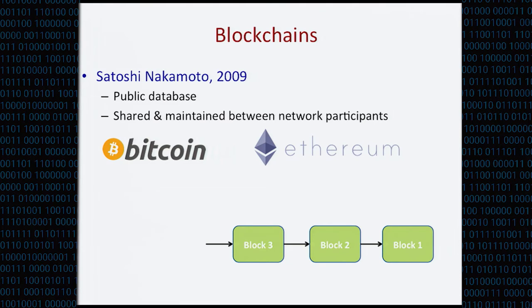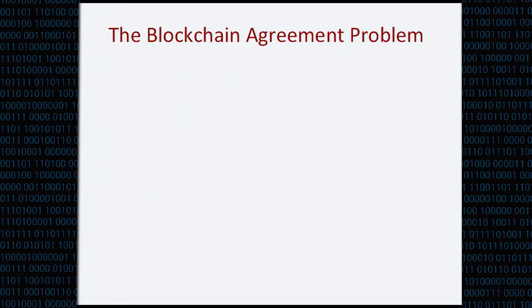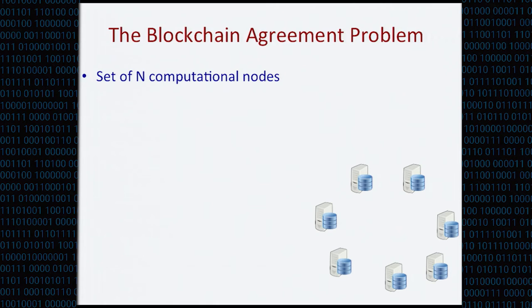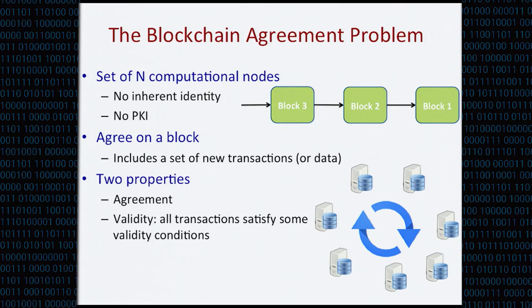These network participants run something called a blockchain agreement protocol so that they can periodically agree on a new block of data and append it to the latest state of the blockchain. These protocols solve the blockchain agreement problem, run between a set of N computational nodes in the network. These nodes don't have any inherent identity and there is no public key infrastructure in the network. There are two important properties a block must satisfy: the agreement property — all honest nodes must agree on the same block — and the validity property — all transactions included in the block must satisfy some validity condition. For example, in cryptocurrency, the double-spending property is a validity condition that every node must check.